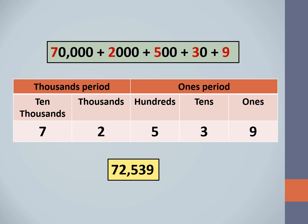Let us look at another example. Begin by identifying the place value of the digits and write them in the place value chart. Here, we write 7 in the ten-thousands place, 2 in the thousands place, 5 in the hundreds place, 3 in the tens place, and 9 in the ones place. Hence, the standard form of the given expanded notation is 72,539. Always remember to put the comma to separate the periods.